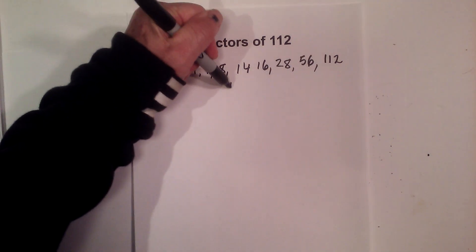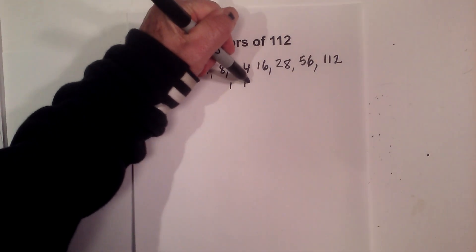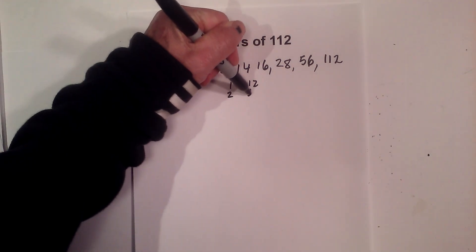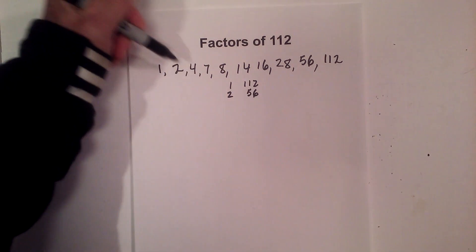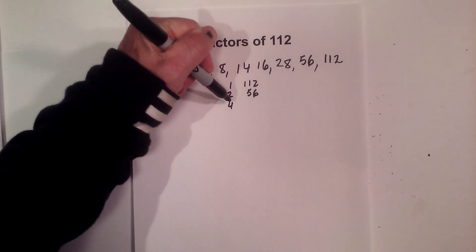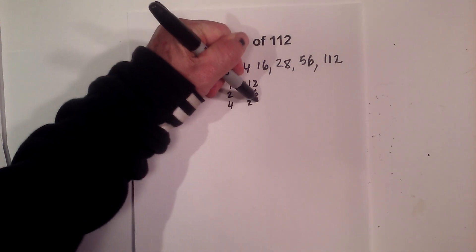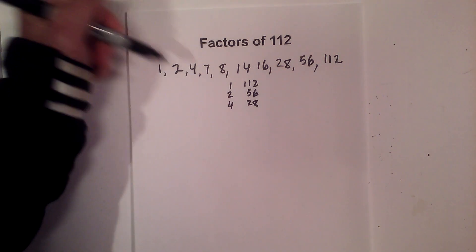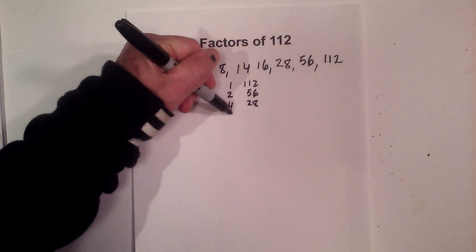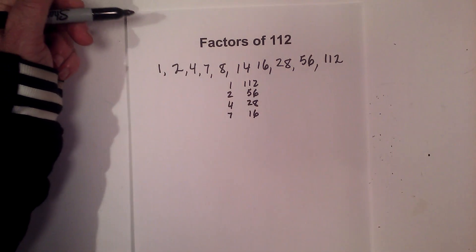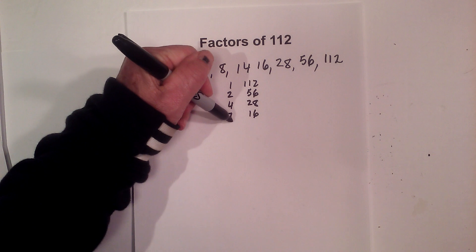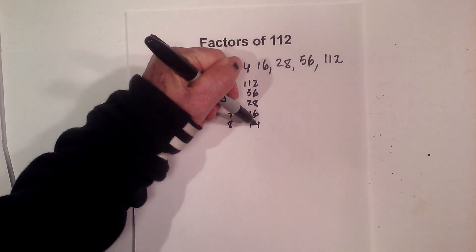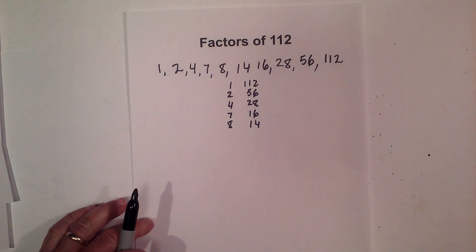If you'd like them in pairs, it's 1 times 112, 2 times 56, 4 times 28, 7 times 16, and 8 times 14.